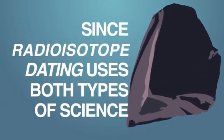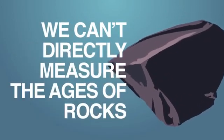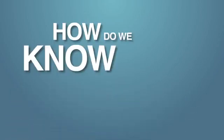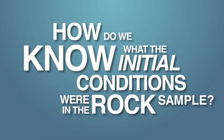Since radioisotope dating uses both types of science, we can't directly measure the ages of rocks. There are assumptions involved. For instance, how do we know what the initial conditions were in the rock sample?